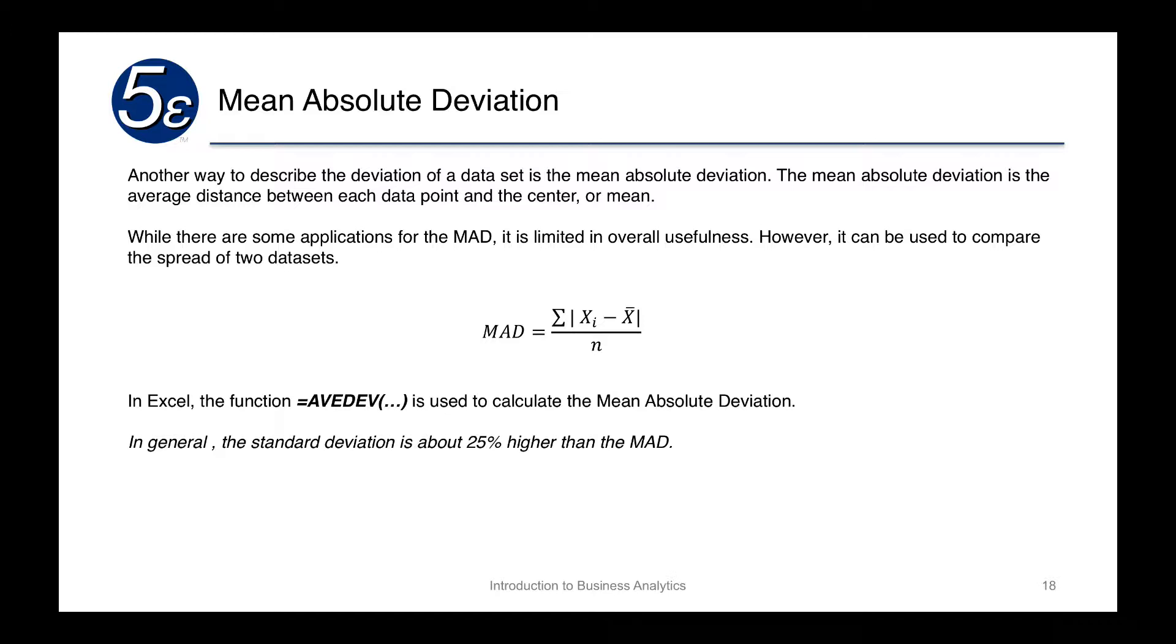Now another term is the mean absolute deviation. The mean absolute deviation is another way to describe the data set and it is basically the average distance between each data point.